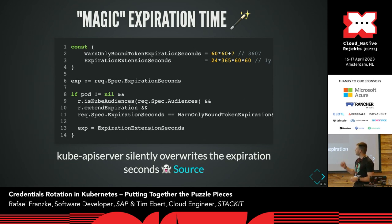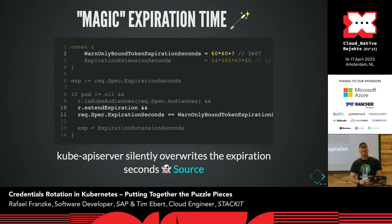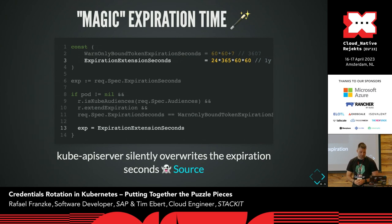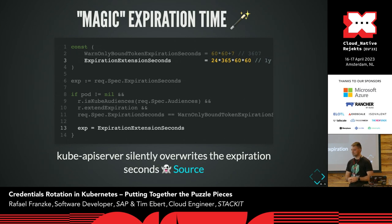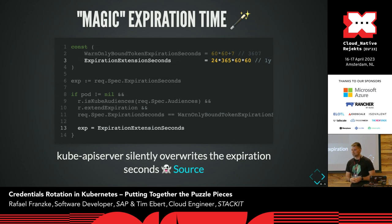If you look into the source code — extracted from the Kube API server, from the function that issues the token — when the 'extend expiration' value is set to true and the expiration seconds is 3,607, it actually silently overrides the expiration to a year. We as a client said we want a token for an hour, but what we get is a token for a year. Why? In the past, Kubernetes used tokens without any expiration at all, so clients didn't need to reload the token regularly — it was just always valid. The community is now transitioning to get rid of these non-expiring tokens.